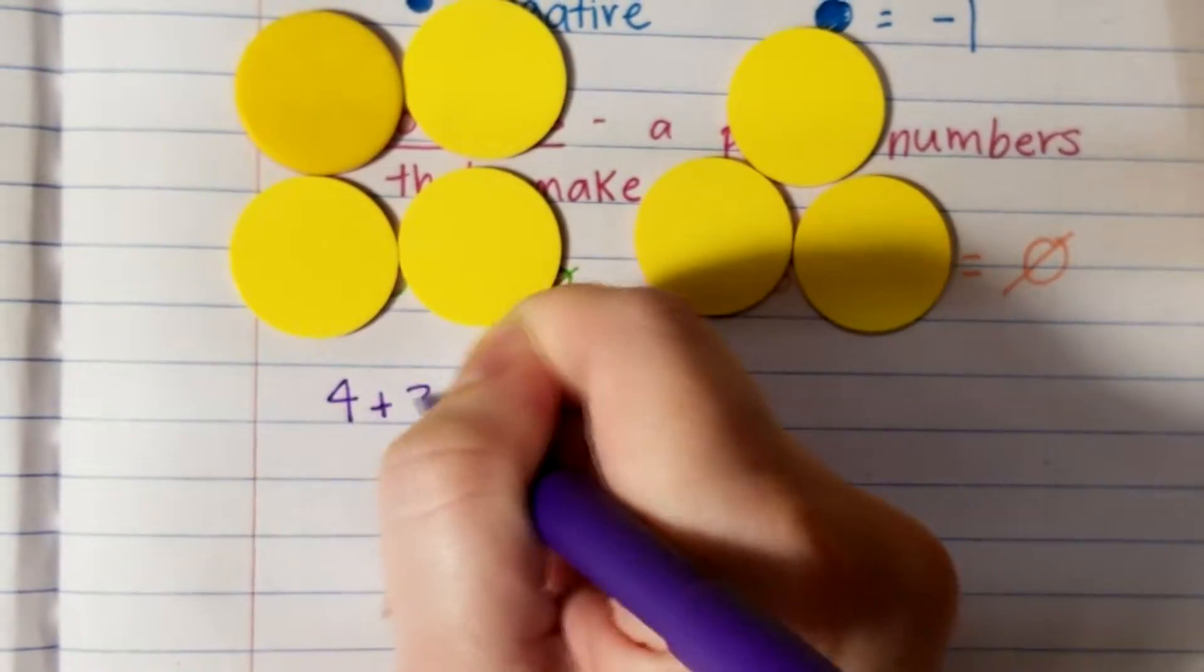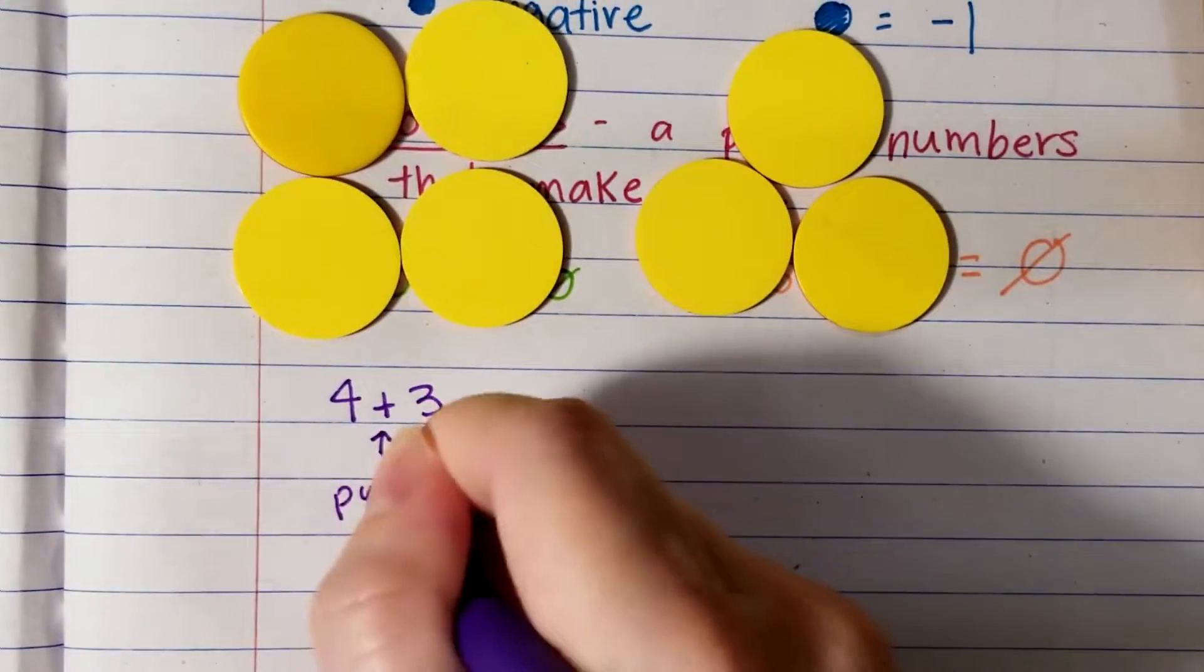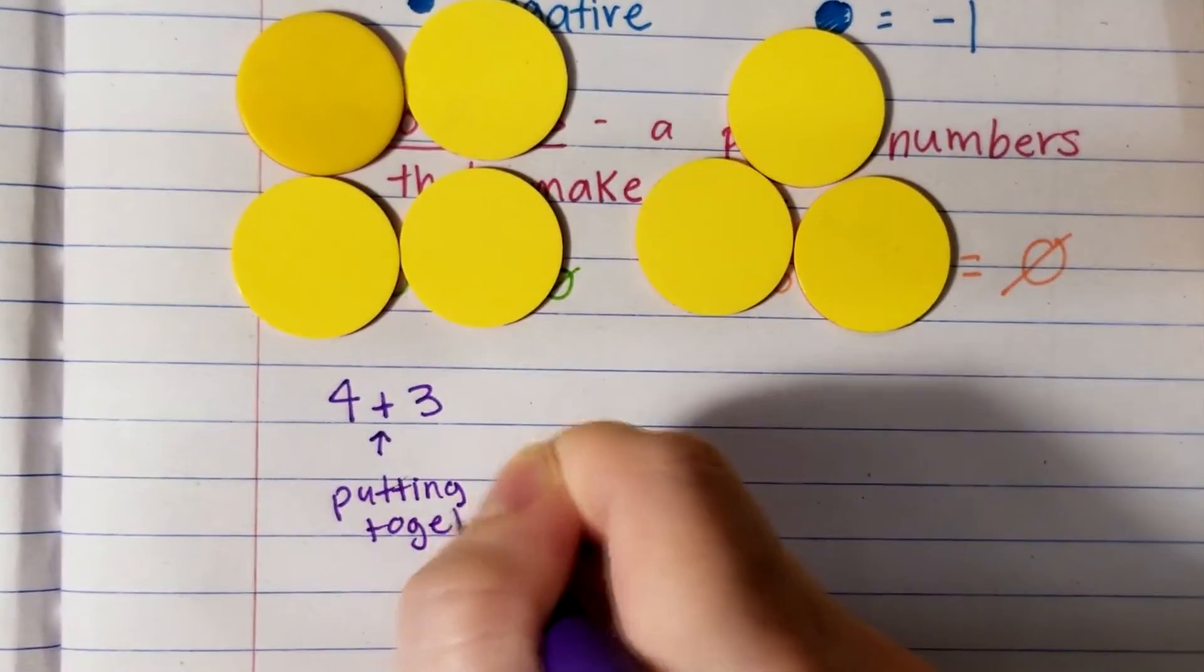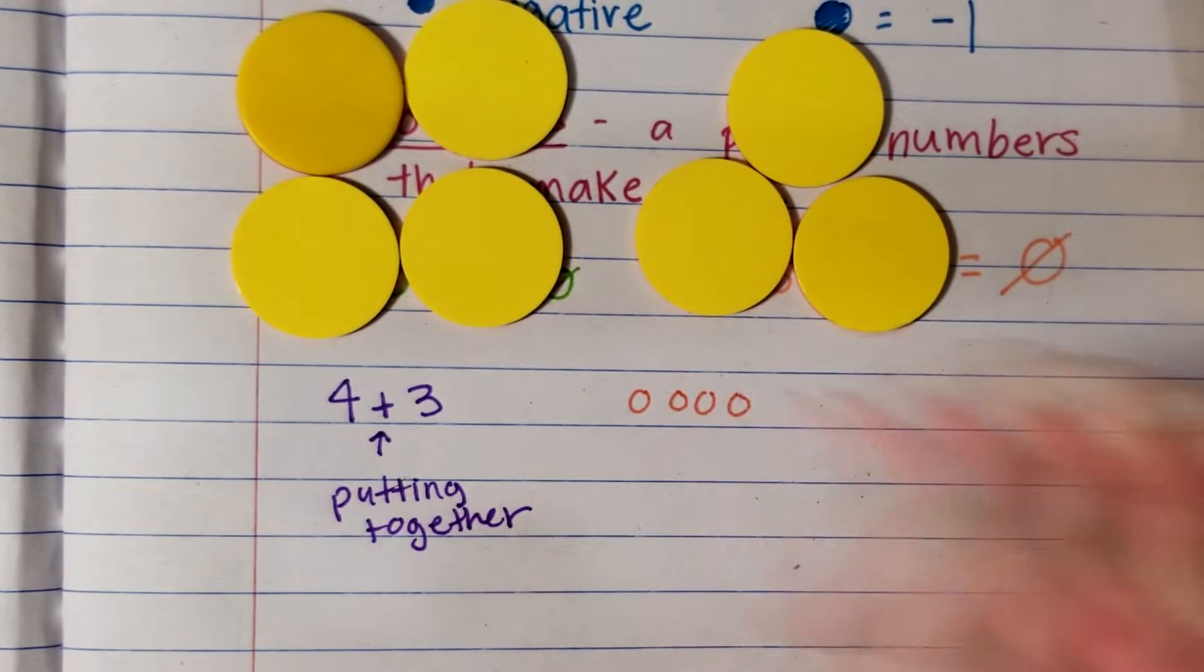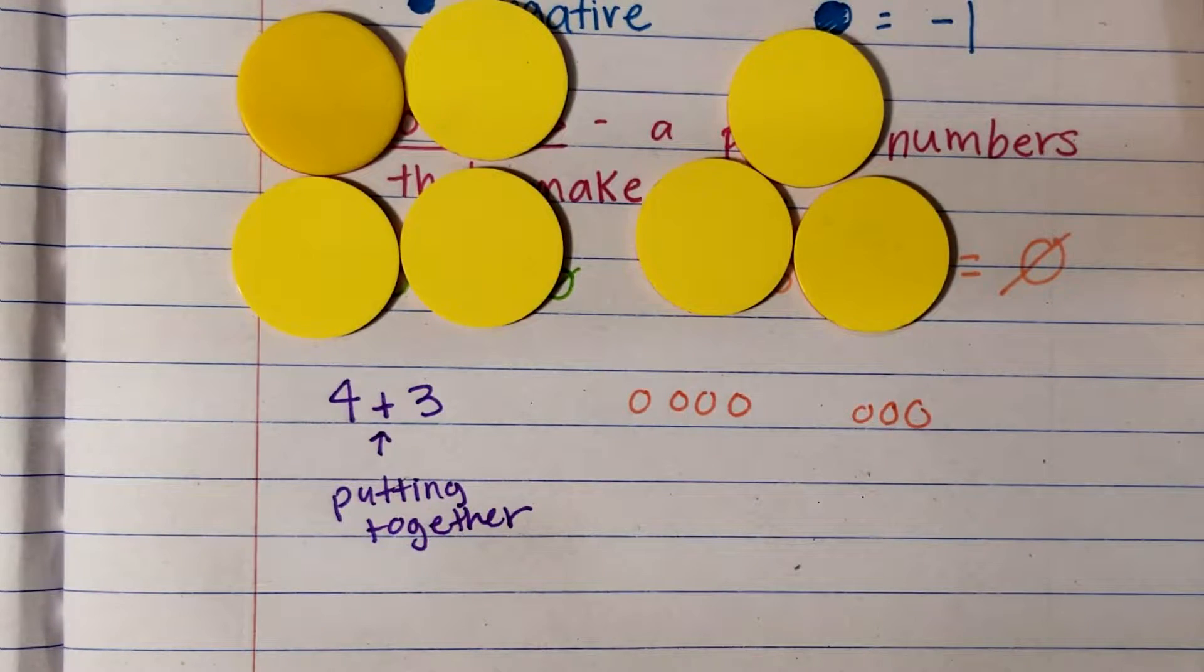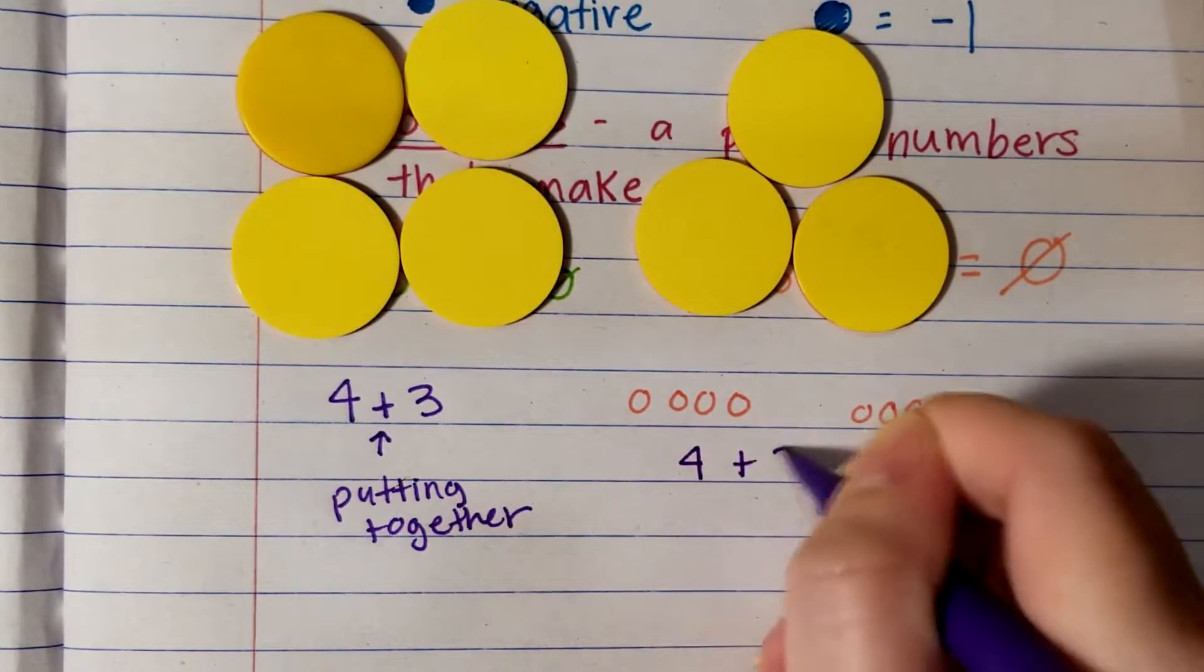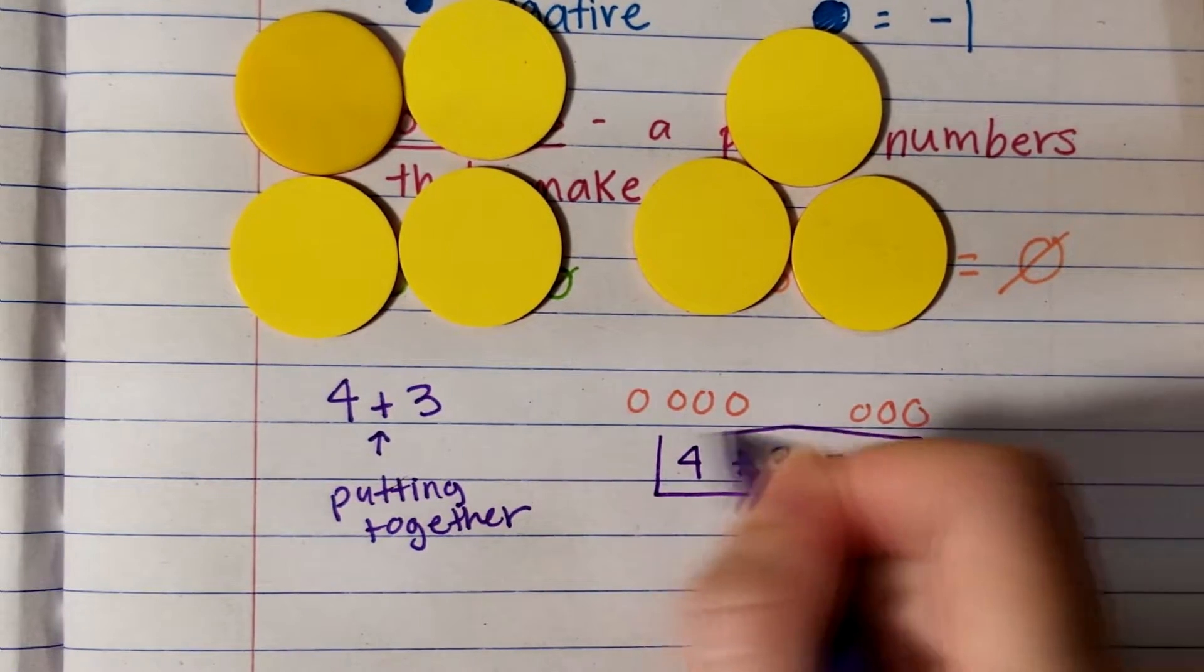Let's start with an easy one. Four plus three. As we read the problem, we see we have four positives. The plus sign means we're adding them or putting them together with three positives. All you have to do is count them. I counted seven. Four plus three equals seven.